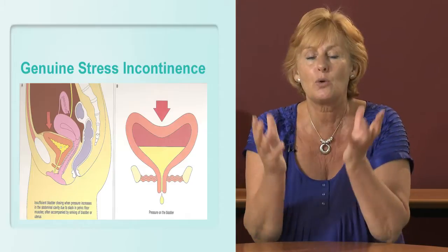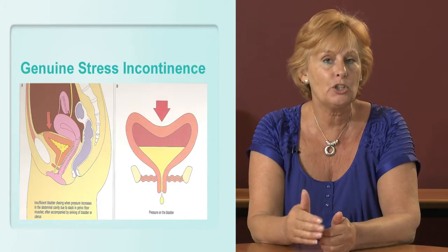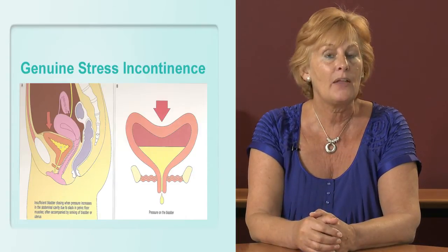Stress incontinence is one of the most common types of incontinence, affecting women most — though it does affect men as well. It is found mostly after women have had babies, had prolapses repaired, or had hysterectomies. It can also result from obesity, an enlarged prostate gland, or other underlying conditions. Stress incontinence occurs when the pelvic floor — the hammock that holds everything up — is weak and has not been sufficiently exercised.